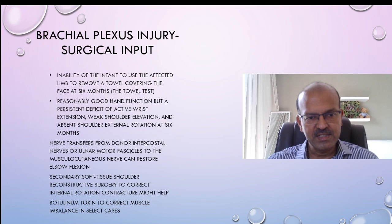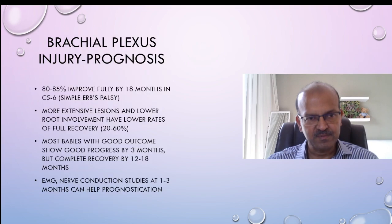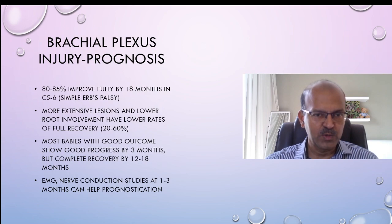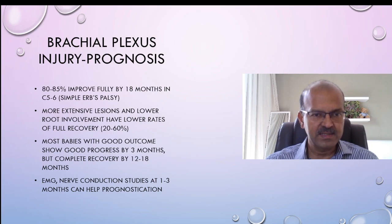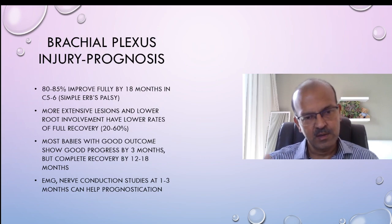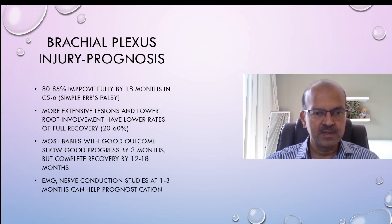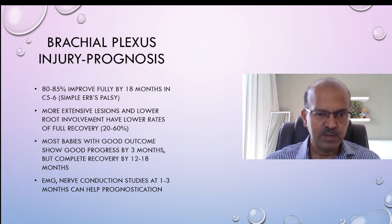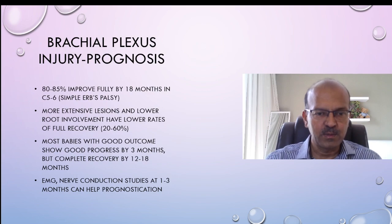In 80 to 85 percent of cases, improvement is almost full by 18 months in a simple Erb's palsy. More extensive lesions have a lower full recovery rate of 20 to 60 percent. Most babies with a good outcome show good progress by three months and complete recovery up to 12 to 18 months. EMG and nerve conduction studies at 1 to 3 months can help with prognostication, though it is not entirely clear-cut whether they do help.